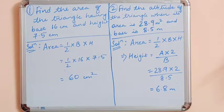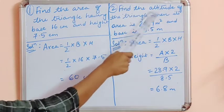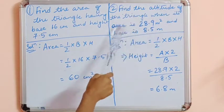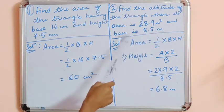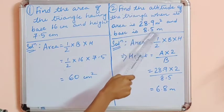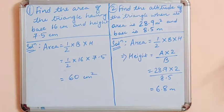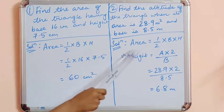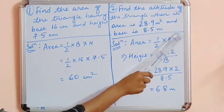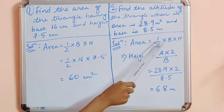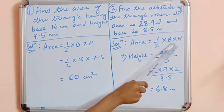Moving on to the second question: find the altitude of the triangle when its area is 28.9 m² and its base is 8.5 m. Altitude means height. Here, area and base are given and we have to calculate height. The formula for area is: area = half into base into height.